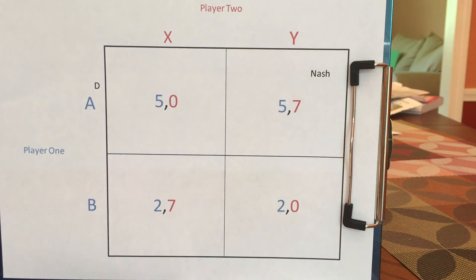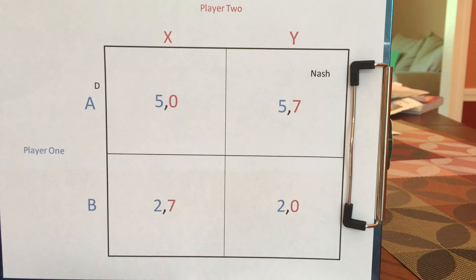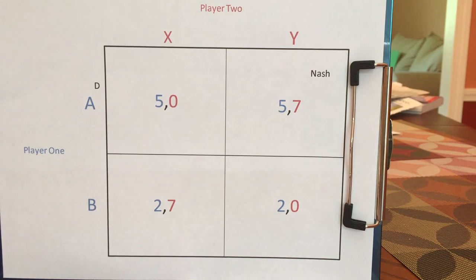To play these games, both people secretly and simultaneously make their choice, then reveal. If no one says, oh gosh, I would have done something different had I known, then you've got a Nash Equilibrium.